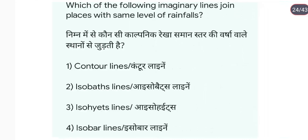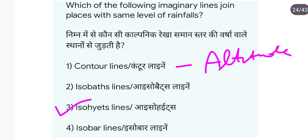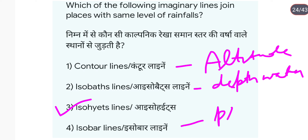Which imaginary line joins places with same level of rainfall? Same level of rainfall को isohyet lines कहते हैं। Contour line होता है same level of altitude के लिए। Isobath क्या होता है — यह depth of water के लिए होता है। Isobar lines pressure के लिए होती हैं — equal pressure। और isohyet आपका rainfall के लिए होता है।